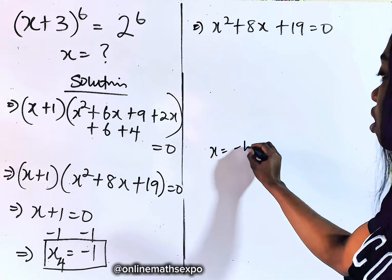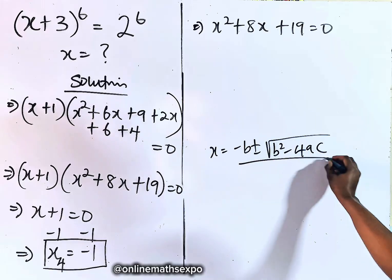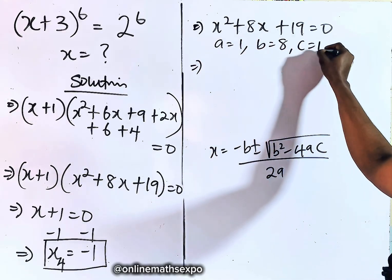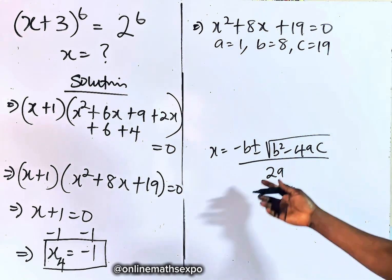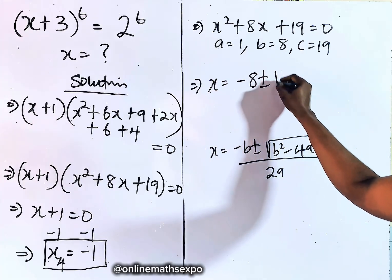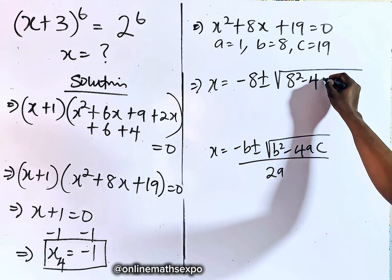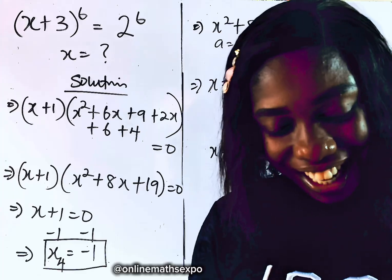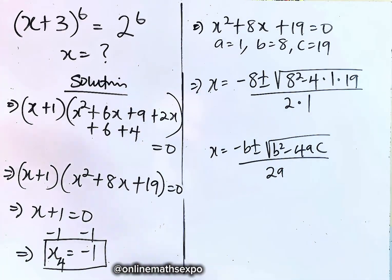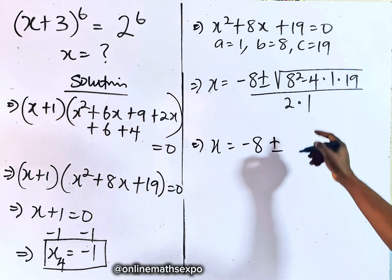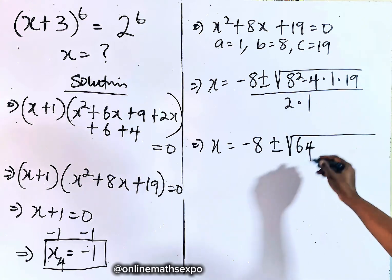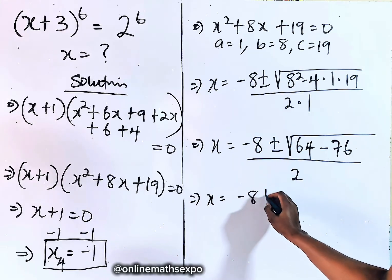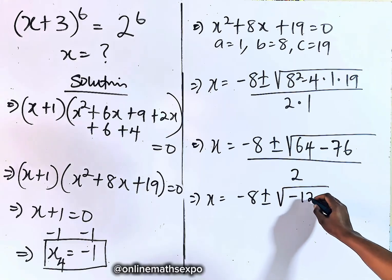Using x = (−b ± √(b² − 4ac)) / 2a, with a = 1, b = 8, and c = 19: x = (−8 ± √(64 − 4·1·19)) / (2·1) = (−8 ± √(64 − 76)) / 2 = (−8 ± √(−12)) / 2. Just like before, √(−12) = 2√3·i.